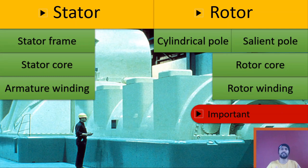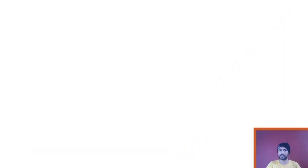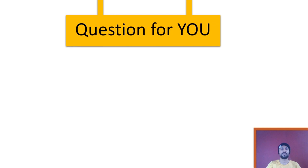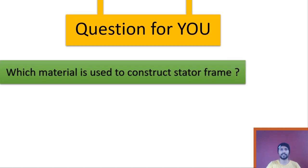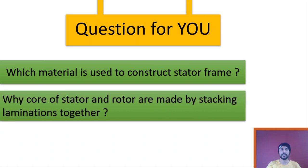So till now we have discussed the construction of the stator part and rotor part. Now I have two important questions for you. The first question is: which material is used to construct the stator frame? The second question is: why are the cores of the stator and rotor made by stacking laminations together? Please answer these two questions in the comment section. You can also share your difficulties and doubts with me in the comments and I will get back to you soon.